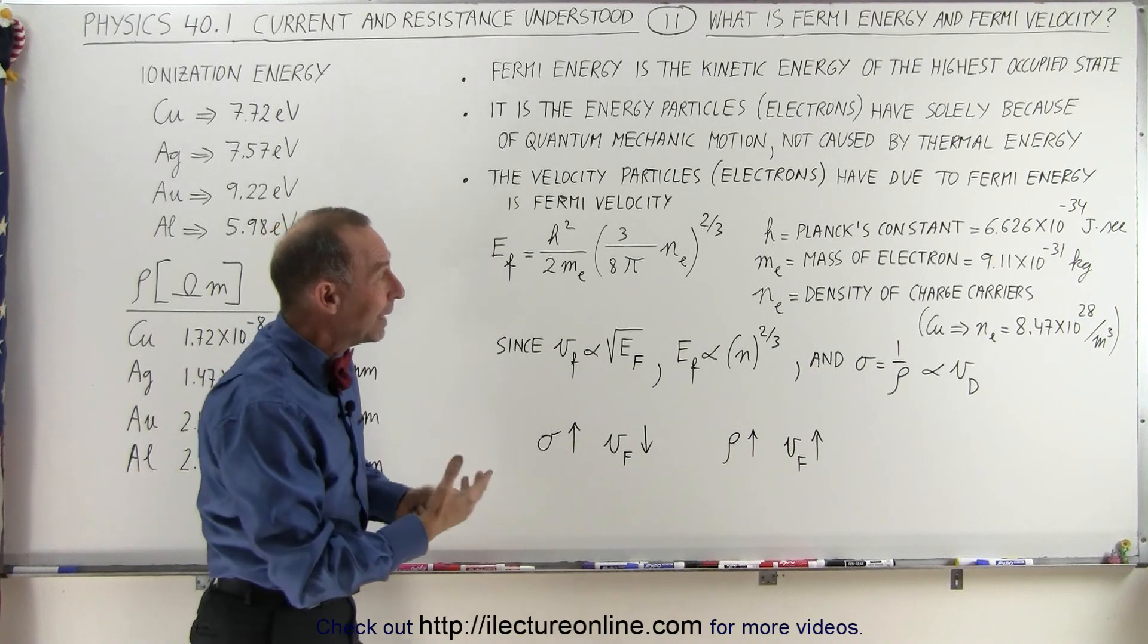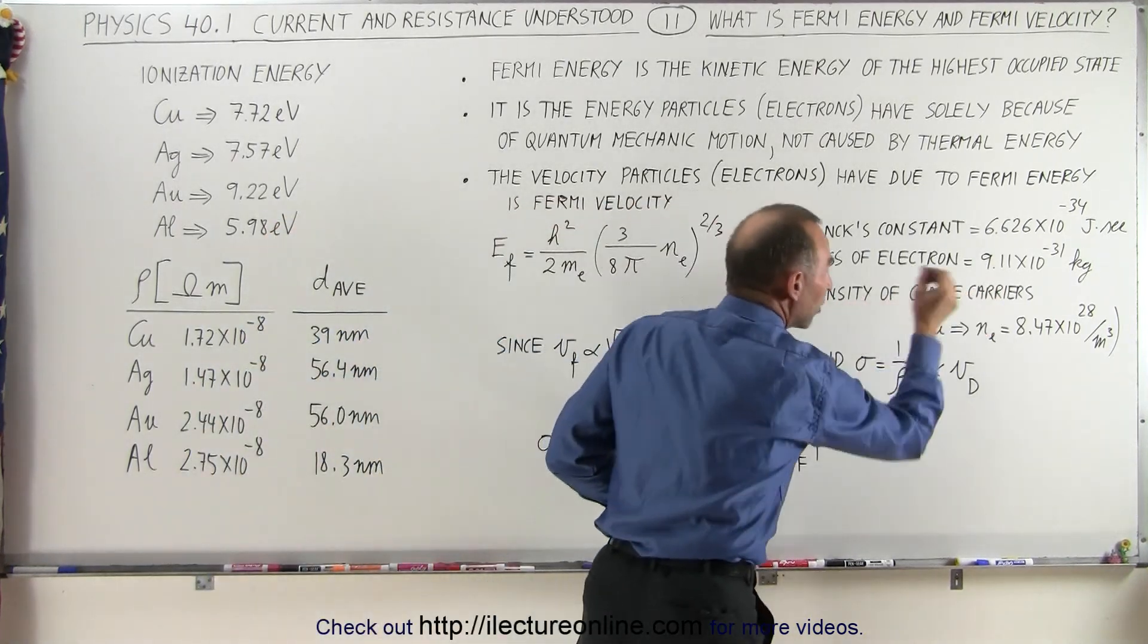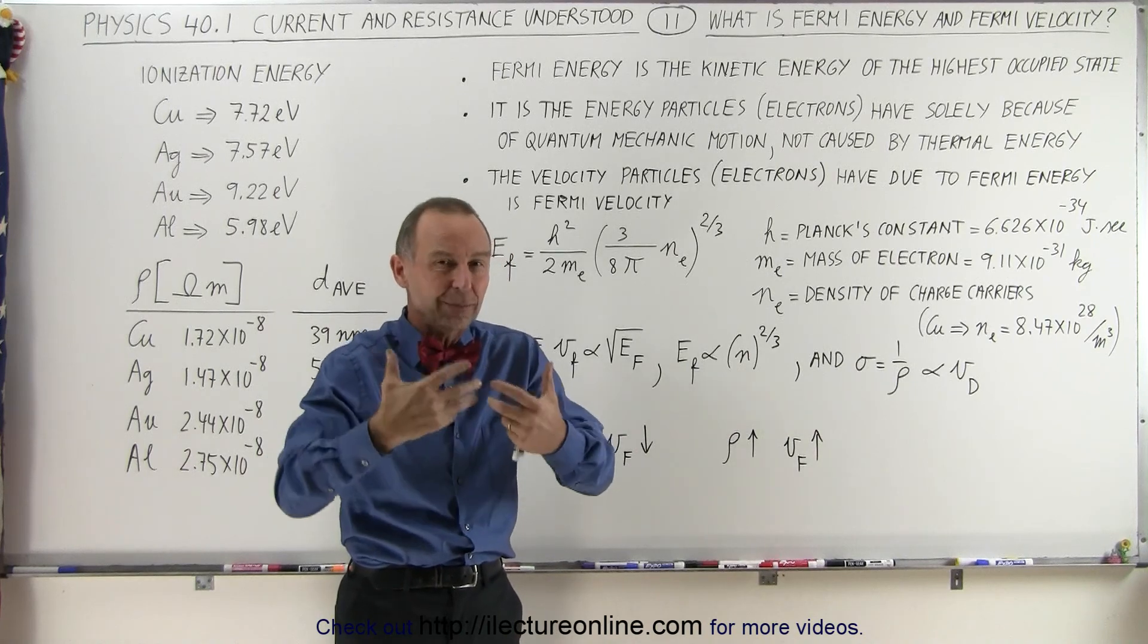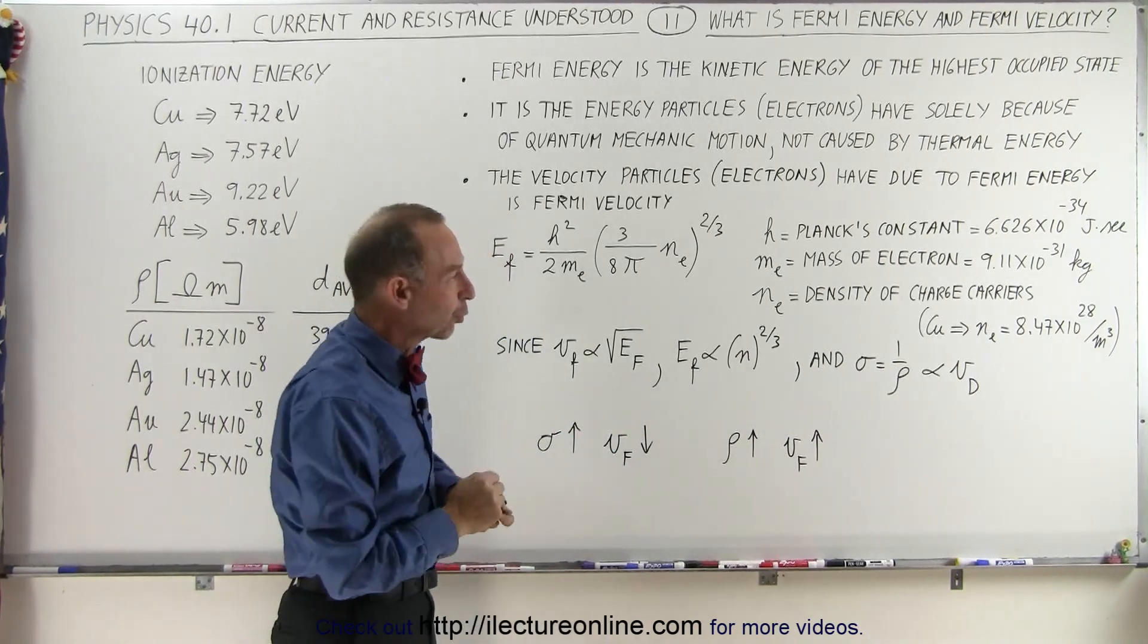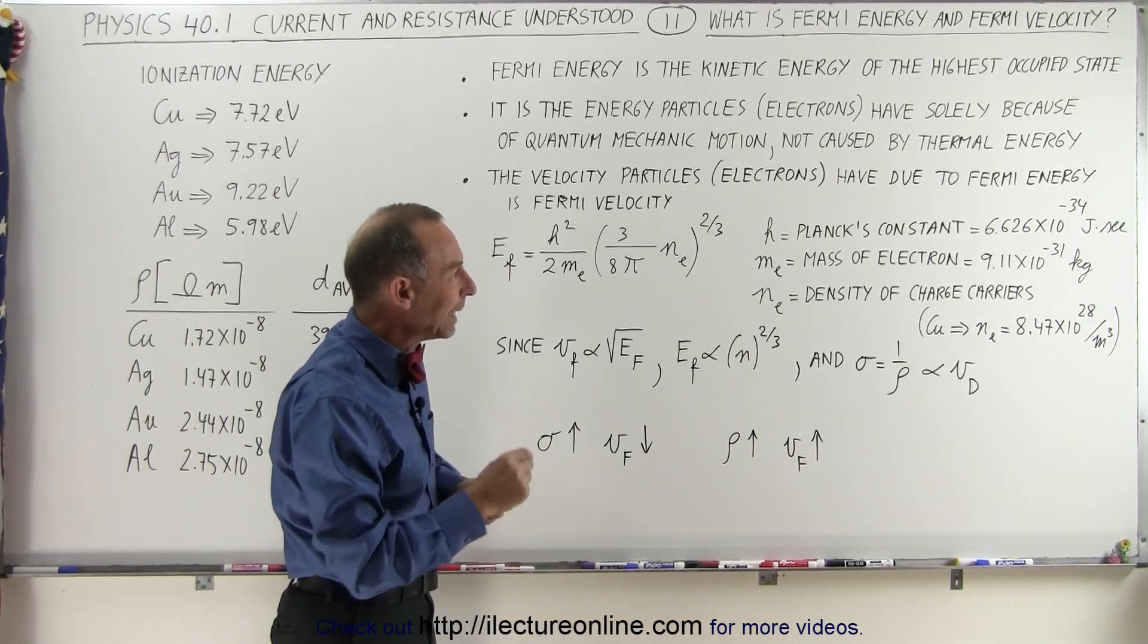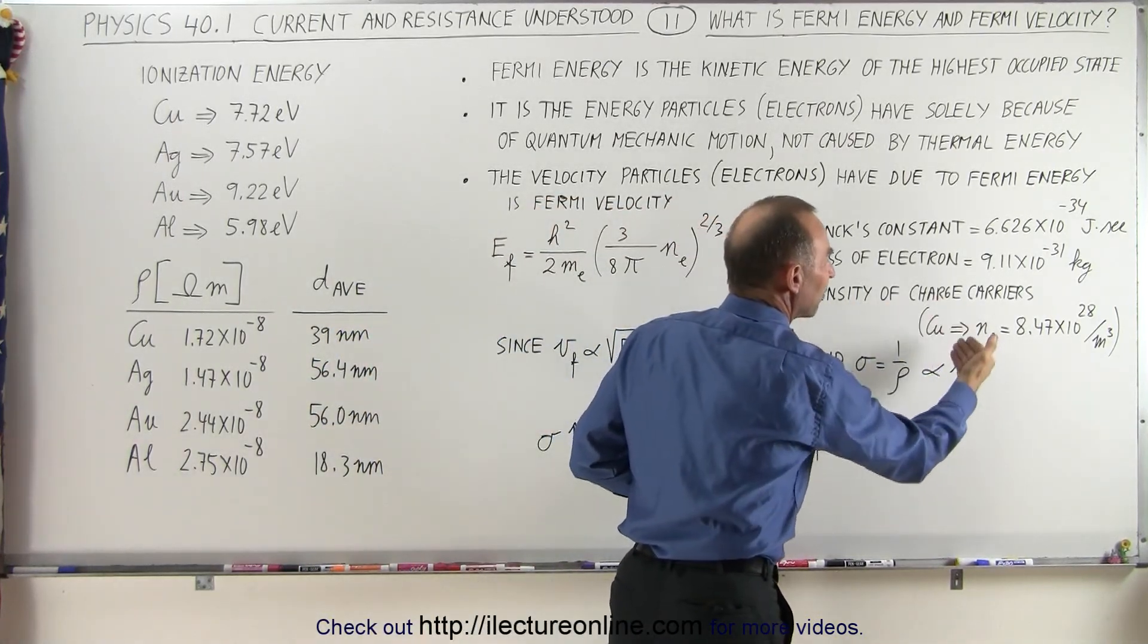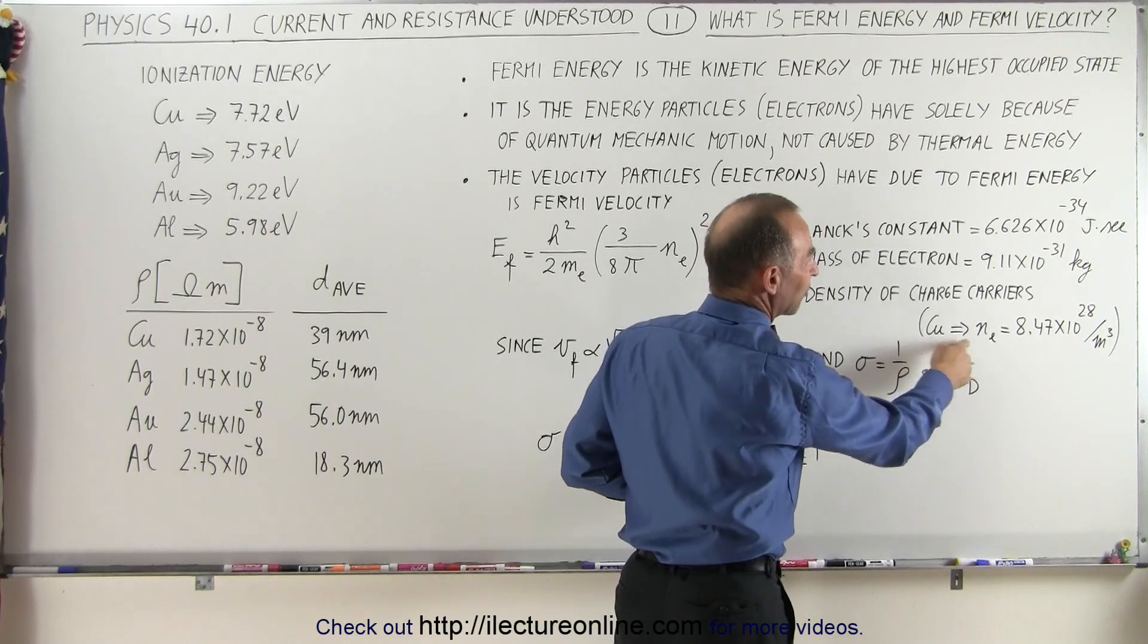Now n_e is the density of the charge carriers, which of course, if you have one charge carrier per atom, which is typically the case for copper, silver, gold, or even aluminum, then the density of the charge carriers equals the density of the atoms in the material.